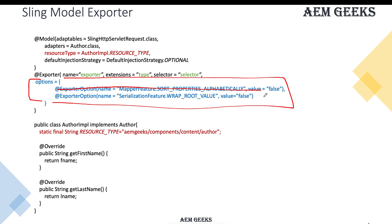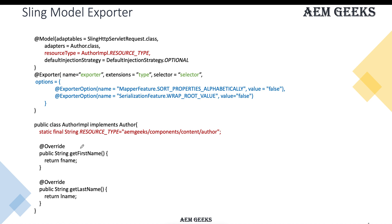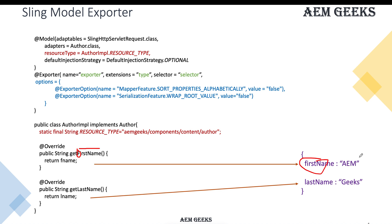Once the exporter is configured, whatever getter methods you have in your Sling Model will be exported in JSON format. JSON is key-value pairs, so the key will be the property name derived from the getter — for example, a getFirstName() method produces a key 'firstName'. The value will be whatever the getter returns. In the next tutorial we'll see a detailed working demo.